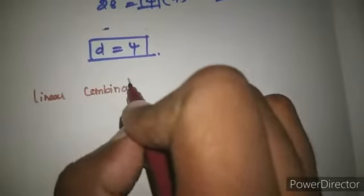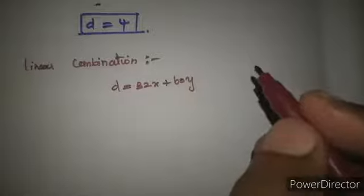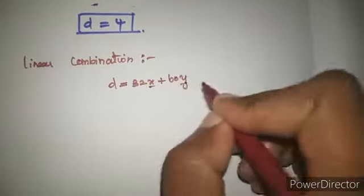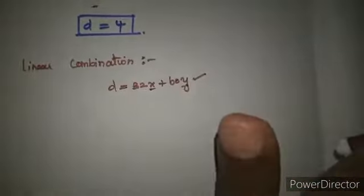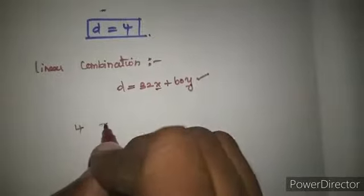Next, the linear combination. What is the linear combination given? D equals 32x plus 60y. We have the value of D, so we need to find X value and Y value. What is the answer format? D value is 4.